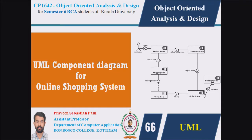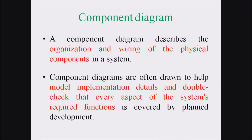In the last lecture we discussed what is a Component Diagram. A Component Diagram describes the organization and wiring of the physical components in a system. Component Diagrams are often drawn to model the implementation details and double check that every aspect of the system's required functions is covered by the planning and development phase.